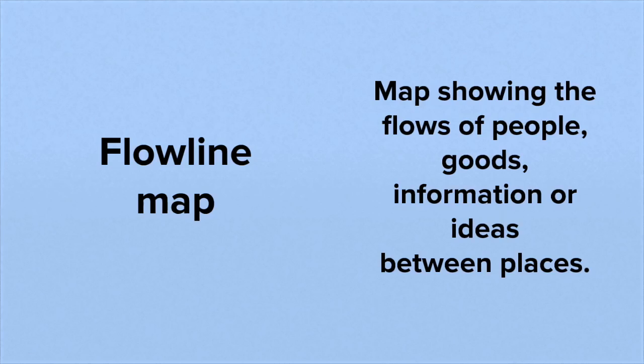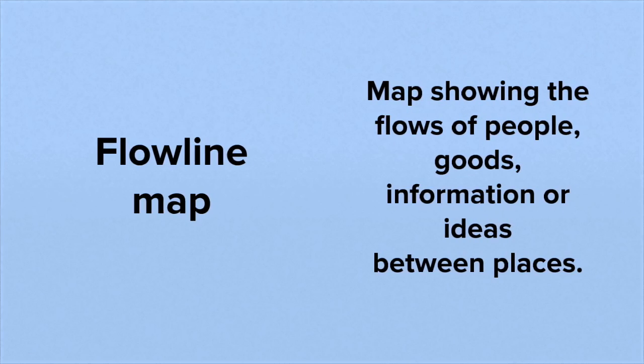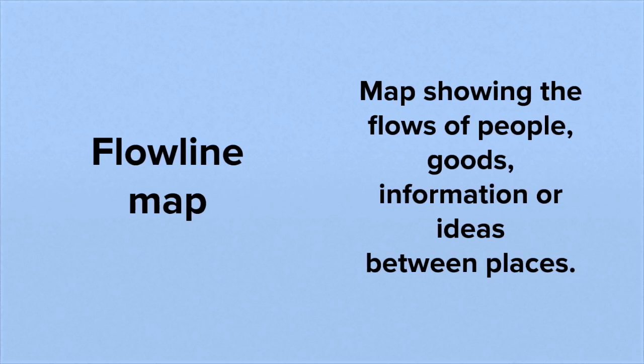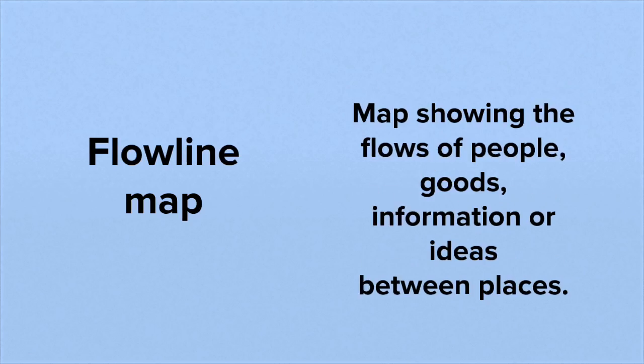First up we have a flowline map. This is a map showing the flows of either people or goods or information or ideas between places.